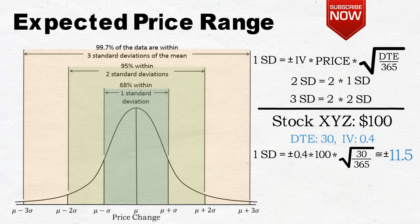This is about plus minus $11.50, which means that one standard deviation range over the next 30 days is $88.50 to $111.50. This means that the markets expect XYZ's price to stay between about $88 and $112 over the next 30 days with about 68% probability.